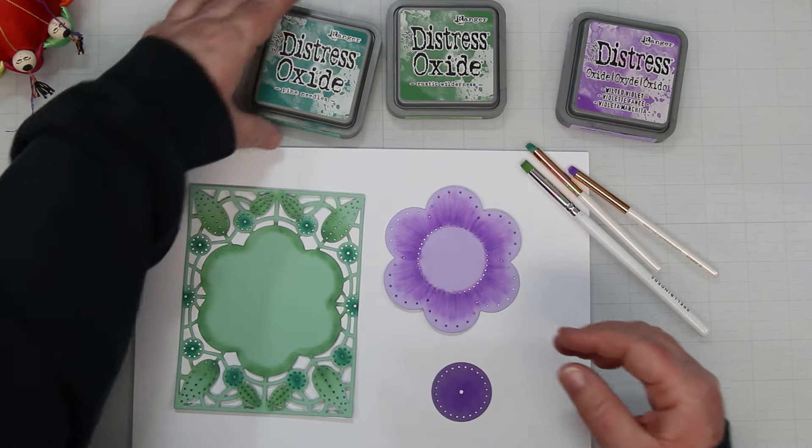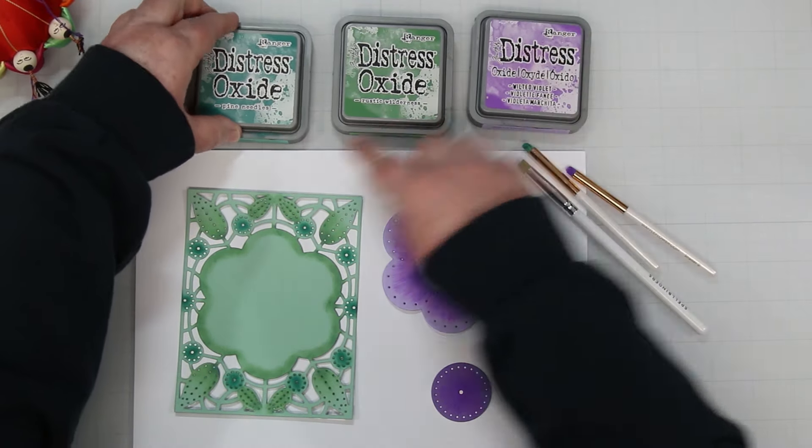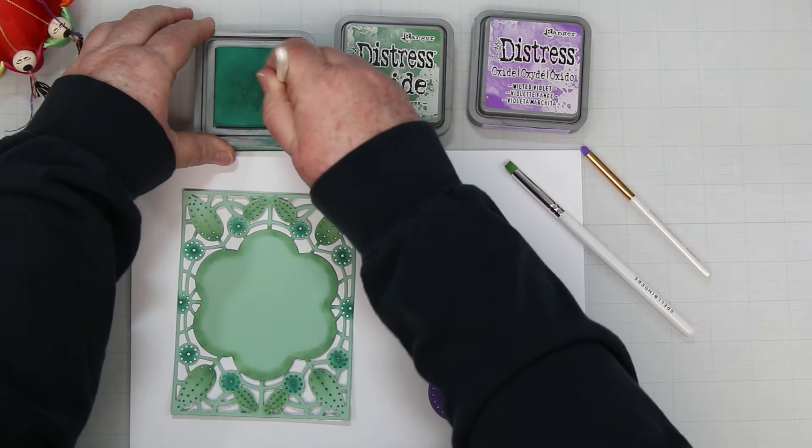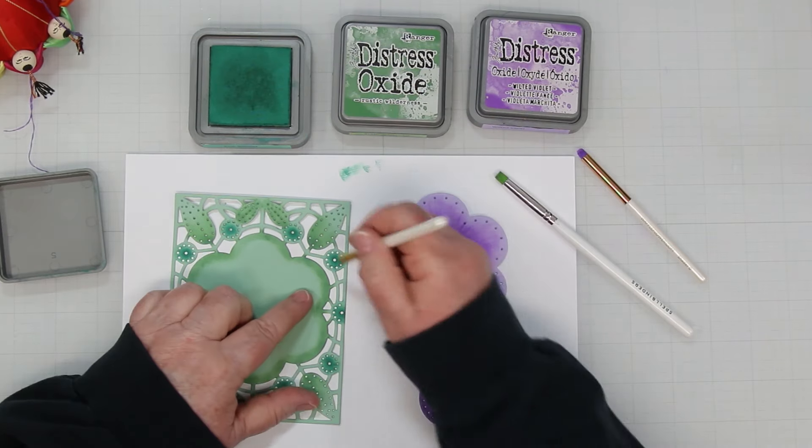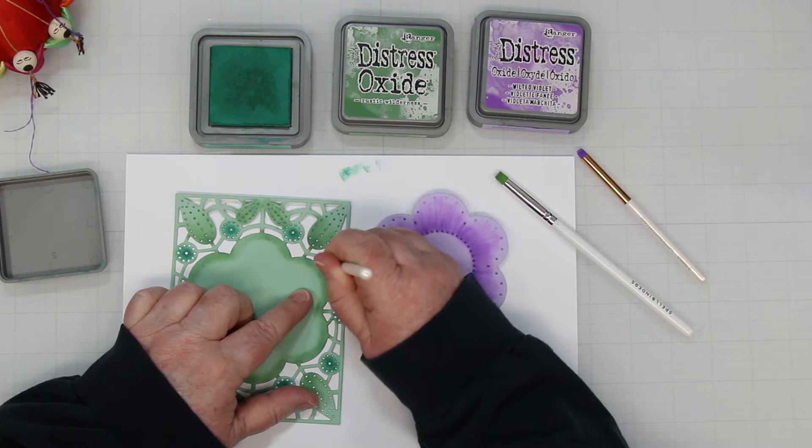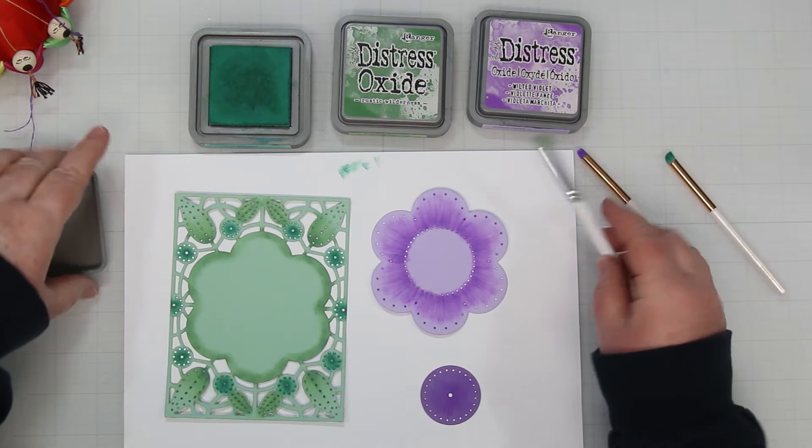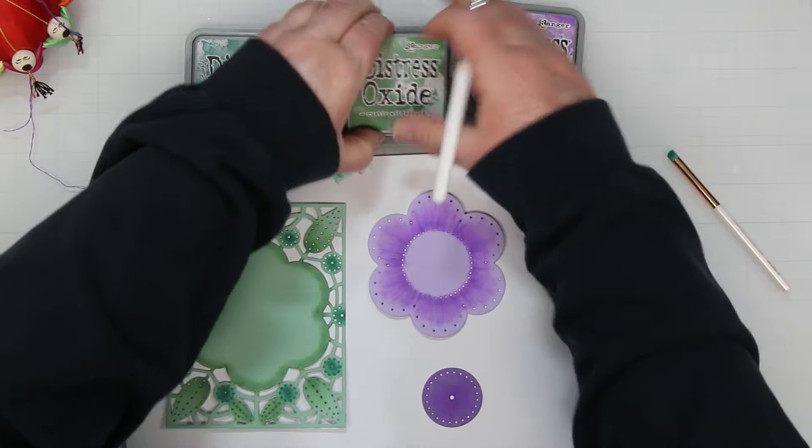I like to add depth and color to my pieces before I stitch by adding some ink blending. Today I am using Pine Needles, Rustic Wilderness and Wilted Violet Distressed Oxide inks. For the small round background pieces I am using the Pine Needles in a circular motion, just adding some deeper green to the center of each of those little circles and these little tiny round blending brushes are perfect for this.